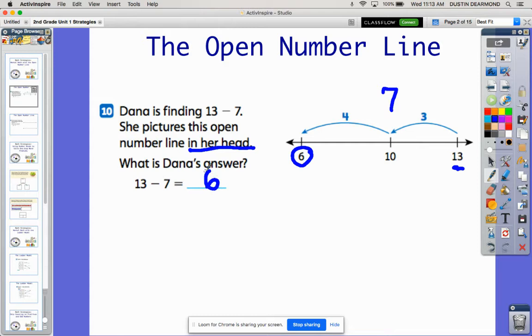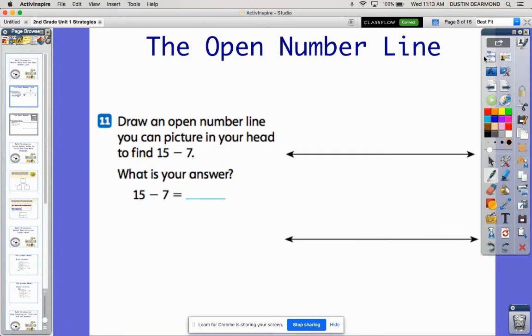So let's look at another example. Again, this is a mental strategy, so we're using the number line to show how we would do it in our head. On this one, this is another subtraction problem. It says 15 minus seven. So again, I'm going to shrink my marker down here just a little bit. I'm going to start at 15.